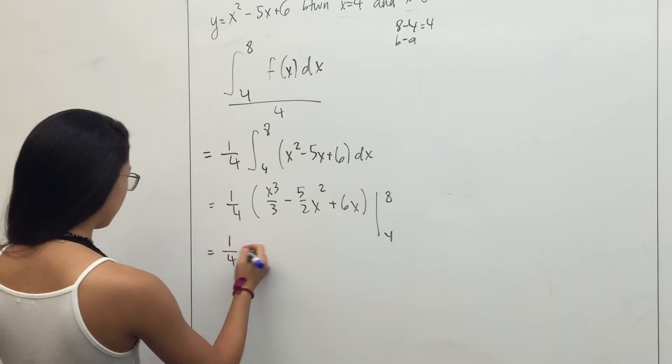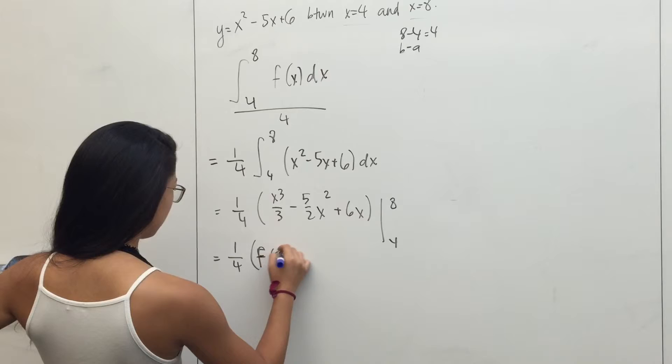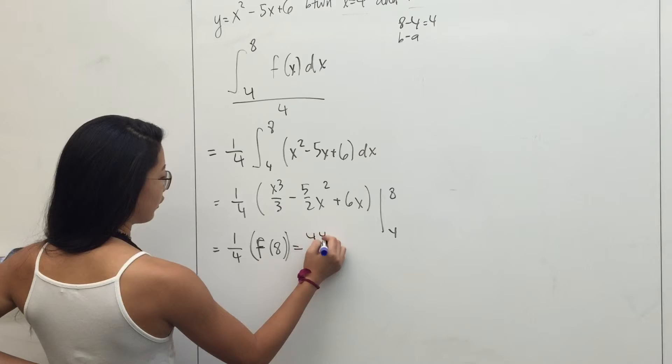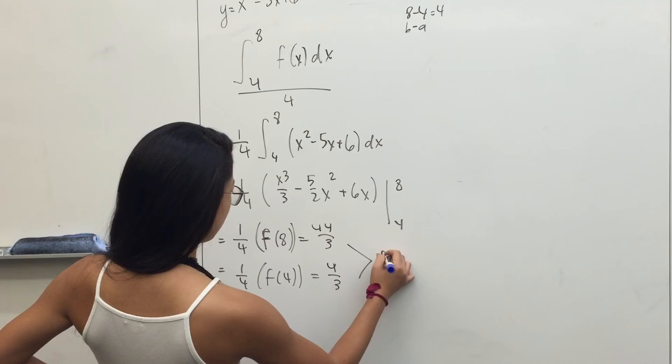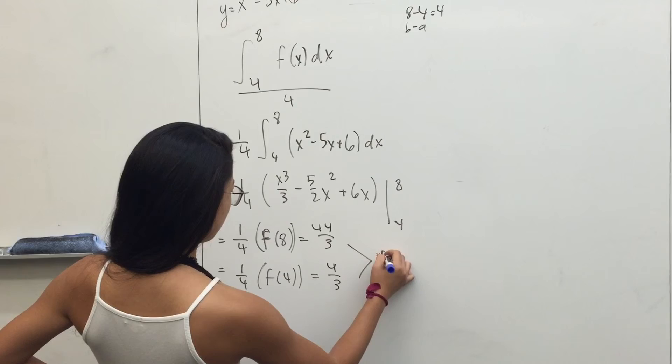So 1 quarter of f of 8 is going to be equal to, when plugging into the calculator, 44 over 3. We're going to do f of 8 minus f of 4, or 44 over 3 minus 4 over 3, which gives us 40 over 3 as the final answer.